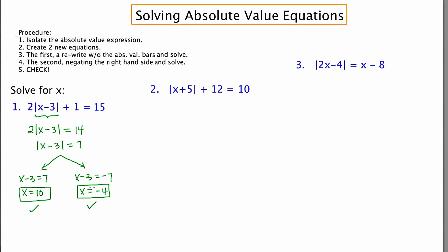In number two, we observe |x+5| + 12 = 10. Again, the absolute value expression is not isolated. There's this plus 12 on the same side and we want to get rid of that, so I'm going to subtract 12 from both sides.